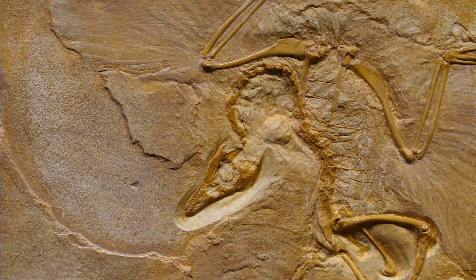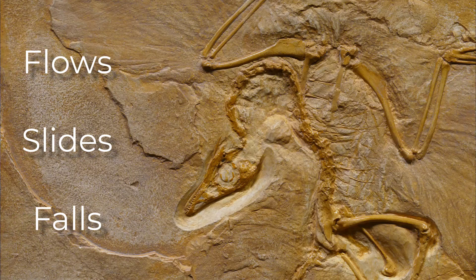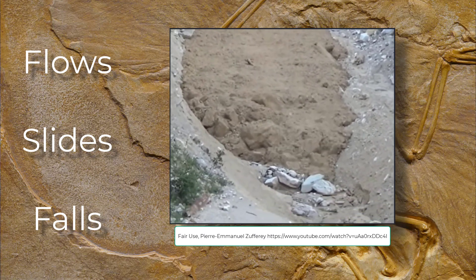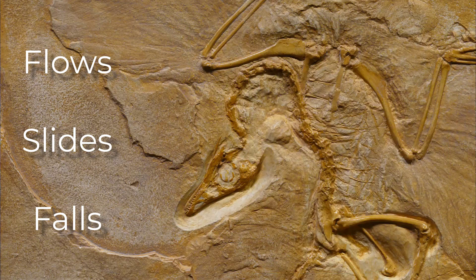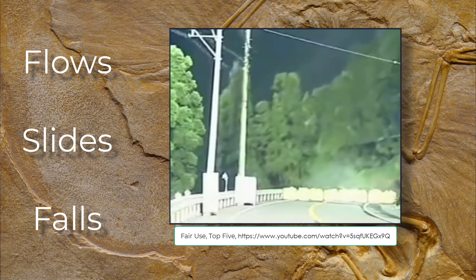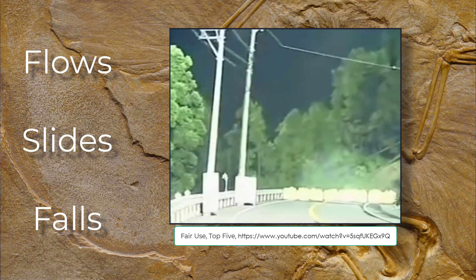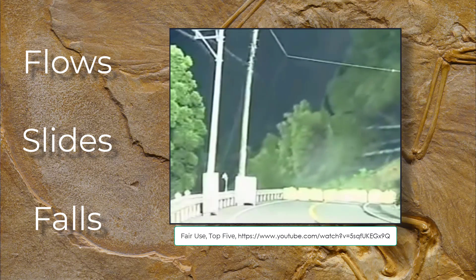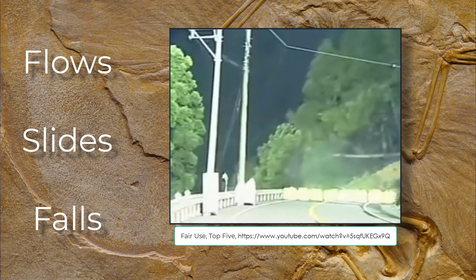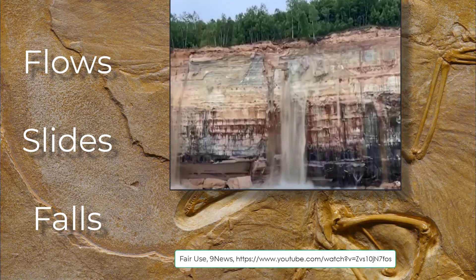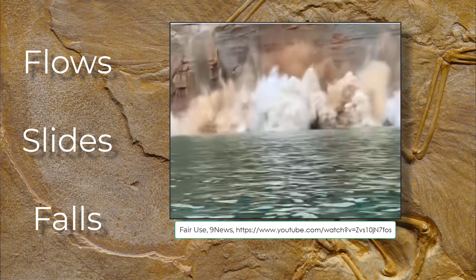Now let's take a look at the three basic types of movement. They are flows, slides, and falls. A flow implies that the material, although churning around and around, kind of stays together as a watery, cohesive whole. A slide means that the material not only stays together as a cohesive whole, but it also doesn't churn around in the mix — the whole mass of earth and rock moves intact and slides across the surface of the earth. Notice in this clip that the trees stay mostly upright. A fall is pretty straightforward and essentially describes free-falling material.